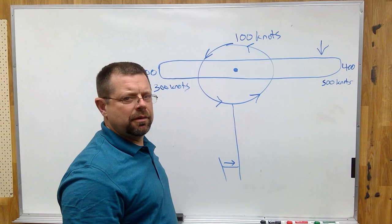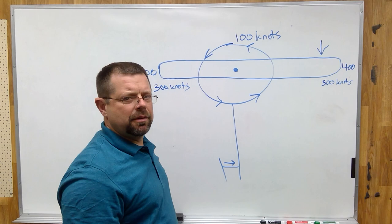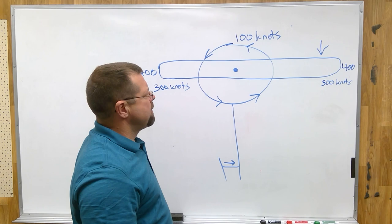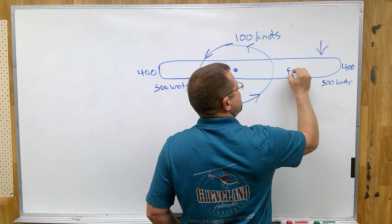This is where blade flapping comes in. In order to make this angle of attack equal on both sides as the helicopter is in forward flight, the advancing blade must flap up.